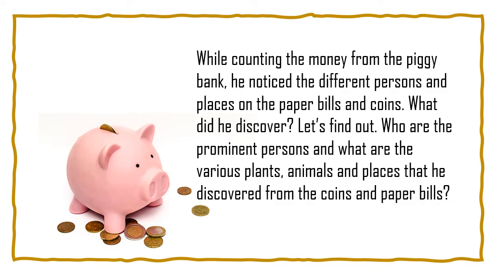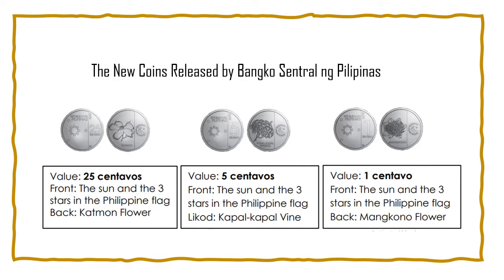Who are the prominent persons and what are the various plants, animals, and places that he discovered from the coins and paper bills? These are the new coins released by Bangko Sentral ng Pilipinas. We'll start with the centavo coins. We have 25 centavos, 5 centavos, and 1 centavo. In front of these coins, you would see the sun and the three stars of the Philippine flag. At the back of the 25-centavo, you would see the catmon flower. At the back of the 5-centavo coin, you would see the kapal-kapal vine. At the back of the 1-centavo, you would see the mankono flower. These are the flowers that can be seen in the Philippines.